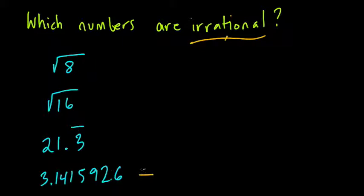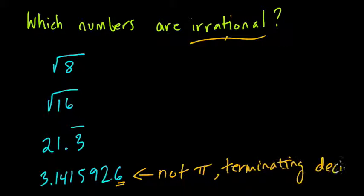I'm going to start with the one at the bottom. This number is not the number pi. Don't be confused there. This is a decimal representation of possibly the number pi. It's 3.1415926 and so forth, but pi keeps going. This decimal ends right here, right at the 6, so it terminates. This is a terminating decimal, and a terminating decimal is not irrational.